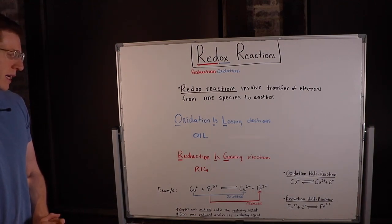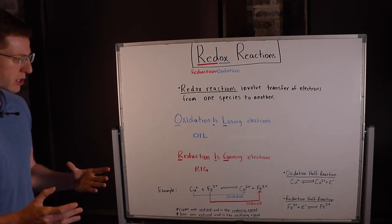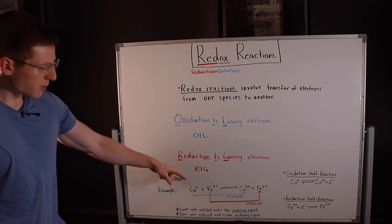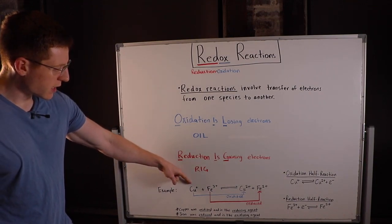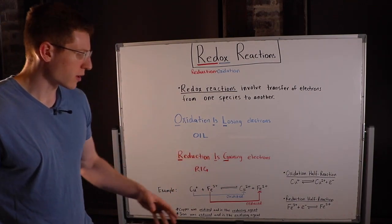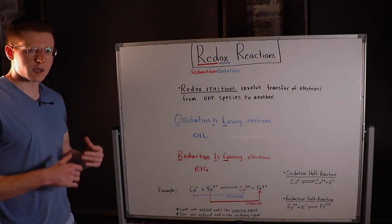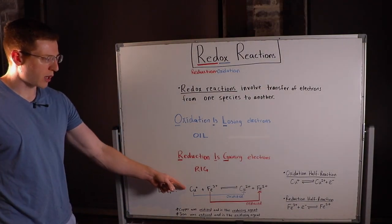Let's pay attention to what happened to the charges of each species. Copper started out with a +1 charge and then ended up with a +2 charge. So the only way that could have happened is if copper lost an electron.